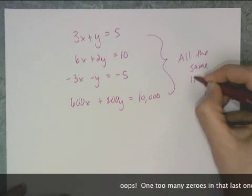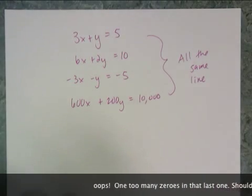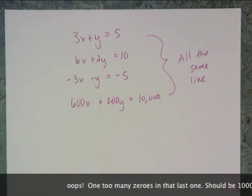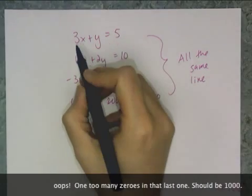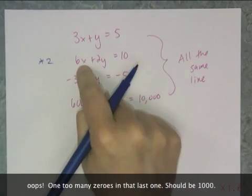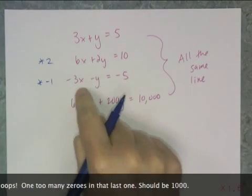And what I can do is scale a line up by multiplying both sides of the equation by some number. So for example, if I take the first equation and I multiply it by 2, I get the second equation. If I multiply the first equation by negative 1, I get this one.